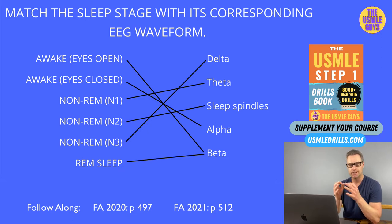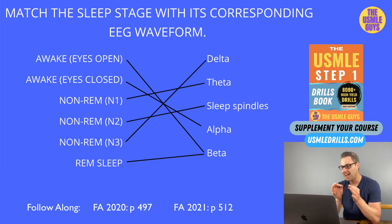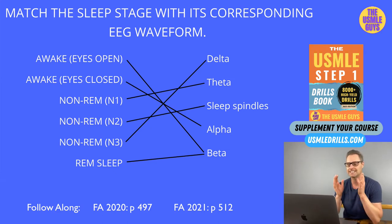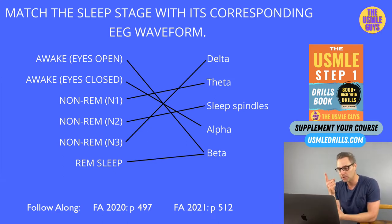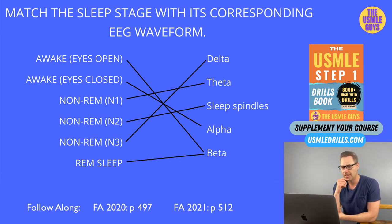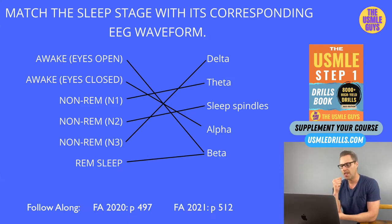Before we get into the sleep stages, don't forget that our circadian rhythm is driven by the suprachiasmatic nucleus of the hypothalamus, which is regulated by certain environmental factors — the most important one being light. The circadian rhythm is needed for the nighttime release of hormones like prolactin, ACTH, melatonin, and norepinephrine. When the SCN is stimulated, it causes the release of norepinephrine, which tells the pineal gland to release melatonin, inducing sleepiness.